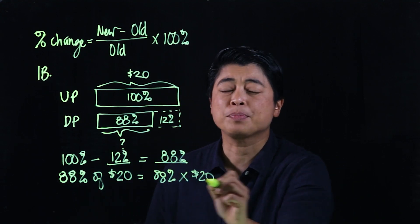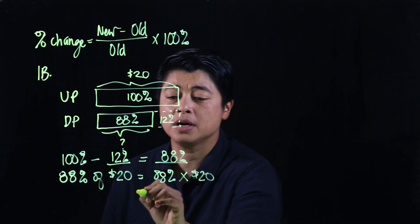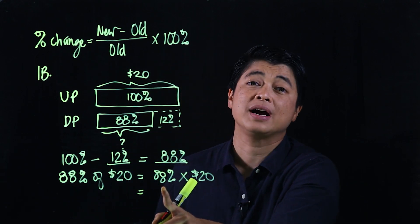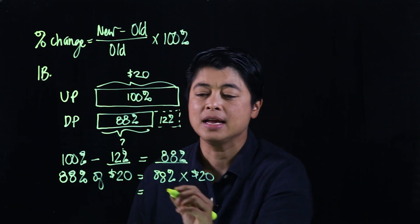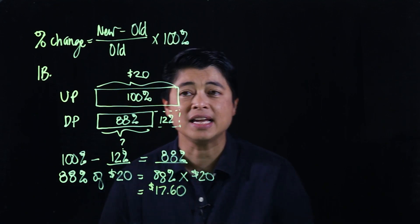So that means 88 percent of $20 is 88 percent times $20. So again, these lines are provided, so we have no choice but to fill it out. But when we multiply that, put it in the calculator as decimal times 20, that should give us $17.60.